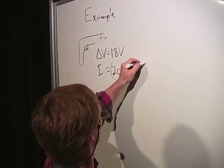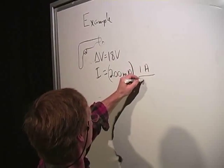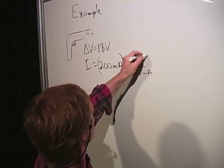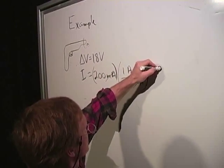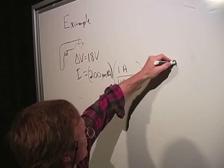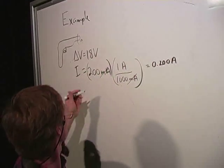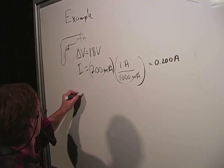There is one amp for 1,000 milliamps. So this is 0.200 amps. So 18 volts, 0.2 amps.